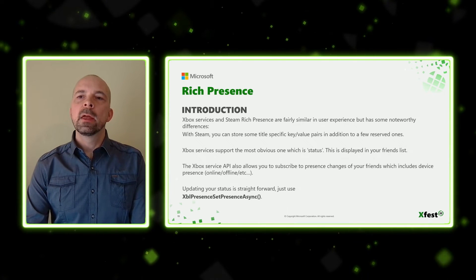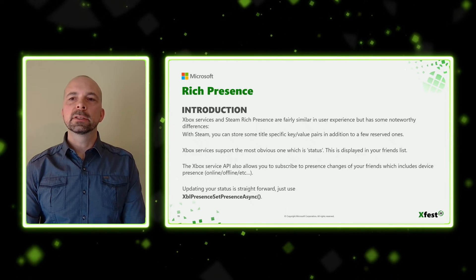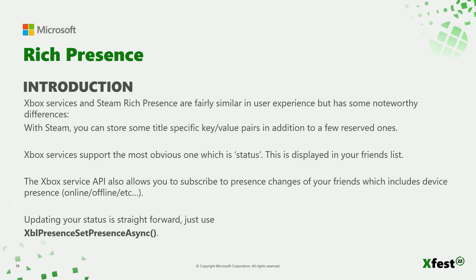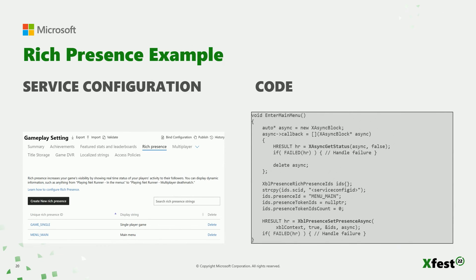All right, on to rich presence. The Xbox service and Steam rich presence are fairly similar in terms of user experience. With Steam, you can set multiple states per user, but with Xbox services you can only set the user-facing status, which is displayed in the friends list. Xbox services allow you to subscribe to your friends' status changes, in addition to their device presence, like if they're online or not. Updating your rich presence only requires a single function call: XBLPresenceSetPresenceAsync. In the partner dashboard, under the rich presence tab in gameplay settings, I've added two entries — one for the main menu and one for our single player experience. I filled in the service config ID and the ID of the rich presence I want to use. Tokens can be used to reuse rich presence strings where the game mode or level is referenced.